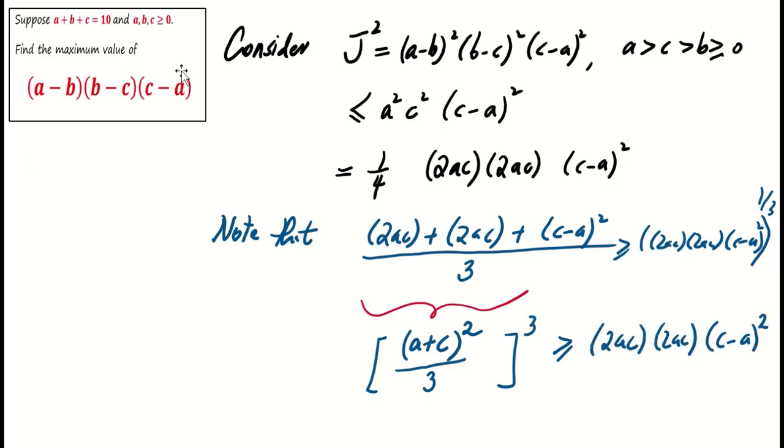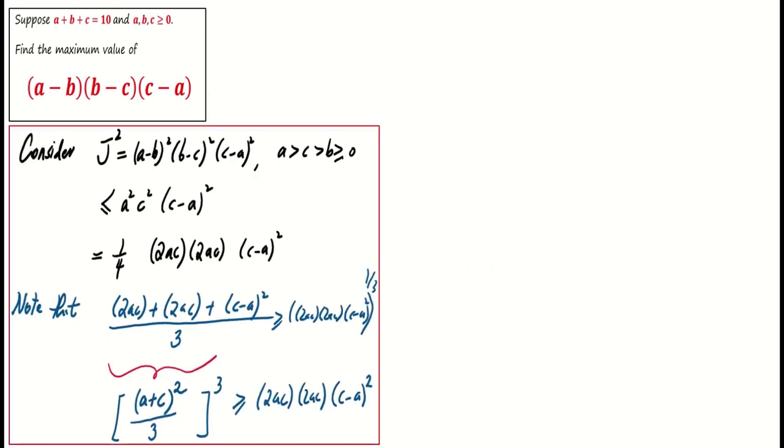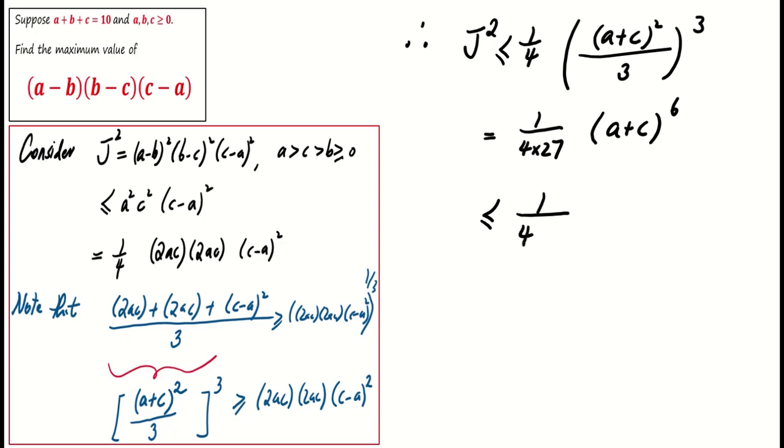Implying that J squared is at most 1 over 4 times ((a plus c) squared over 3) to the power of 3, or equivalently, 1 over 4 times (a plus c) to the power of 6. And note that a plus c is less than a plus b plus c.